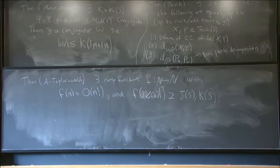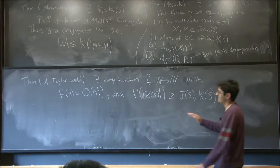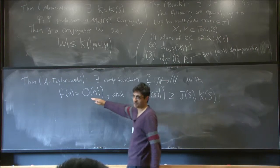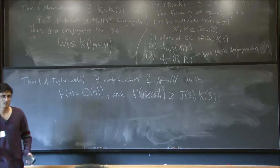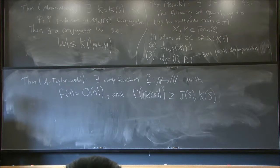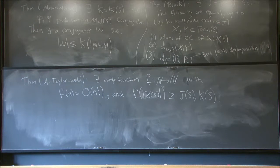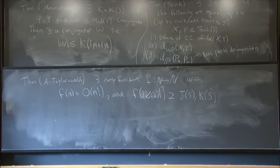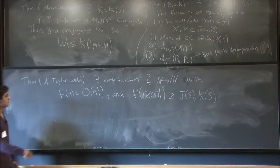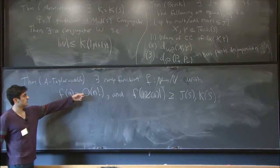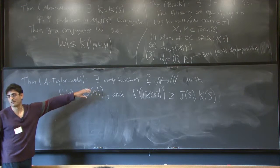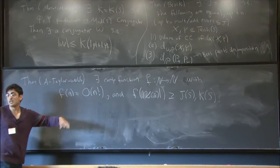It's a big bound — you stop the bleeding in some sense. There are uniform constants that come in front that we know what they are.